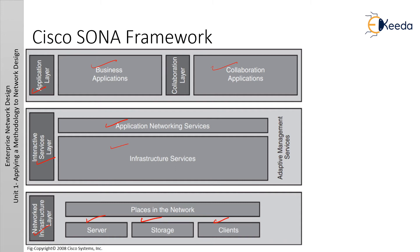In the network infrastructure layer, all IT resources are interconnected across the converged network foundation. The IT resources include servers, storage, and clients. This layer represents how these resources exist in different places in the network, including the campus, branch, data center, enterprise edge, WAN, metropolitan area network, and with the teleworker. The objective of this layer is to provide connectivity anywhere, anytime. The interactive service layer includes both application networking services and infrastructure services. This layer enables efficient allocation of resources to applications and business processes delivered through the network infrastructure.